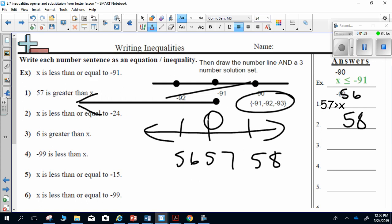57 is greater than 56, or 57 is greater than 58. 57 is greater than 56, so that means 56. I have to draw my arrow going this way.